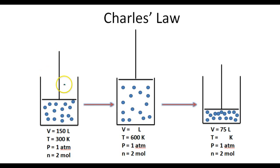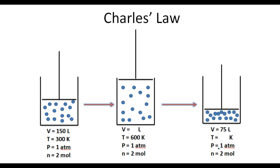Let's take a look at a couple more examples. We have three cylinders and each one of these cylinders is filled with the same amount of gas. Let's suppose that each one of these cylinders has two moles of gas in it. The pressure of each one of these cylinders is at one atmosphere, so the pressure is also being held constant. In this cylinder right here, we've got 150 liters of gas at a temperature of 300 K.